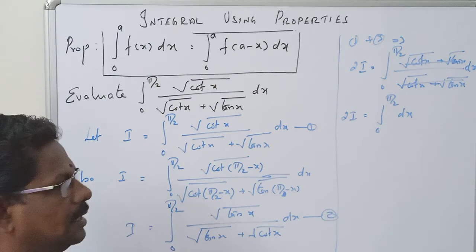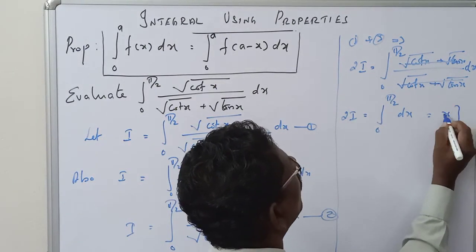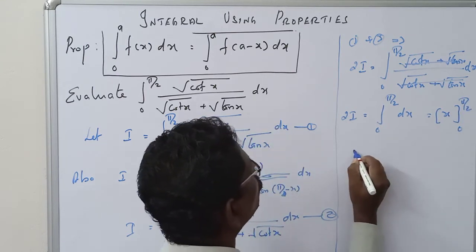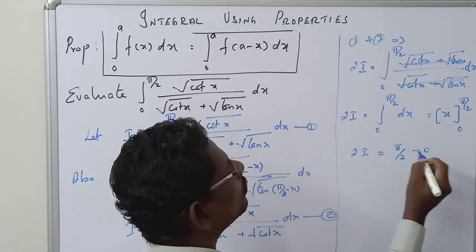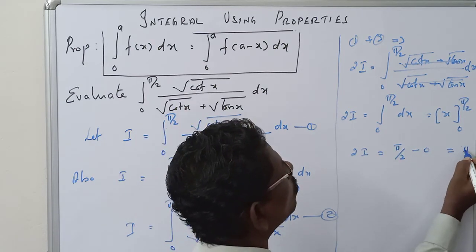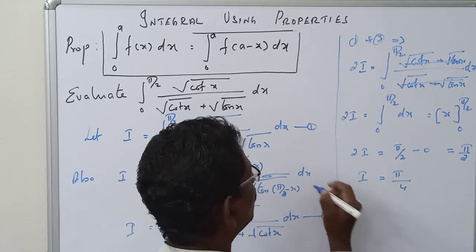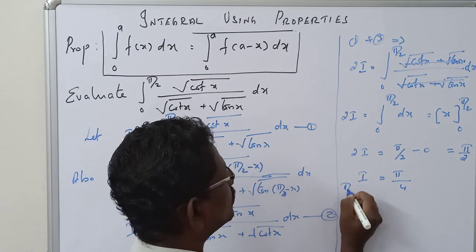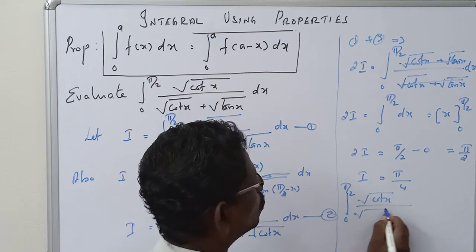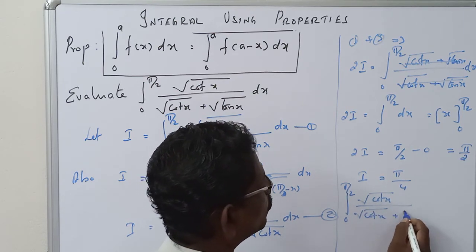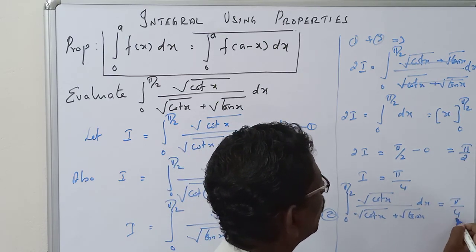So 2I equals the integral from 0 to π/2 of dx. The integration of dx is x. Applying the limits, 2I equals [x] from 0 to π/2, which equals π/2 minus 0, so 2I equals π/2. Therefore, I equals π/4. The final answer: the integral from 0 to π/2 of √(cot x) divided by (√(cot x) plus √(tan x)) dx equals π/4.